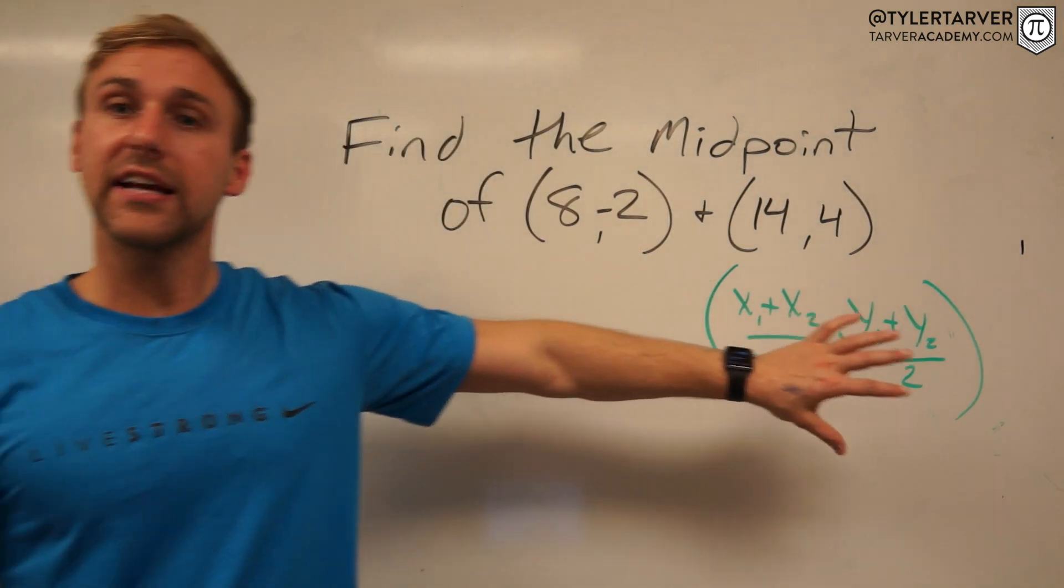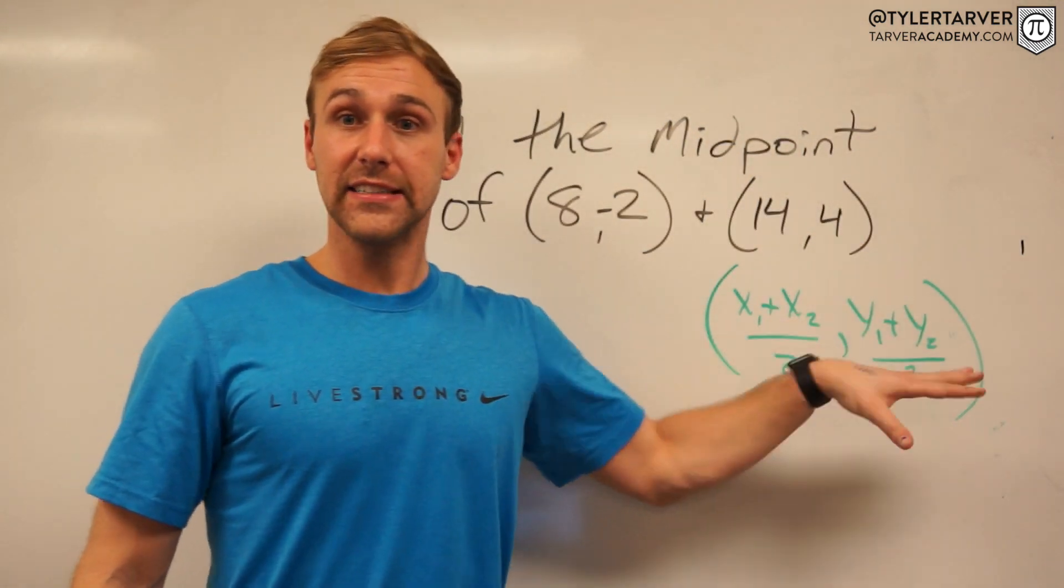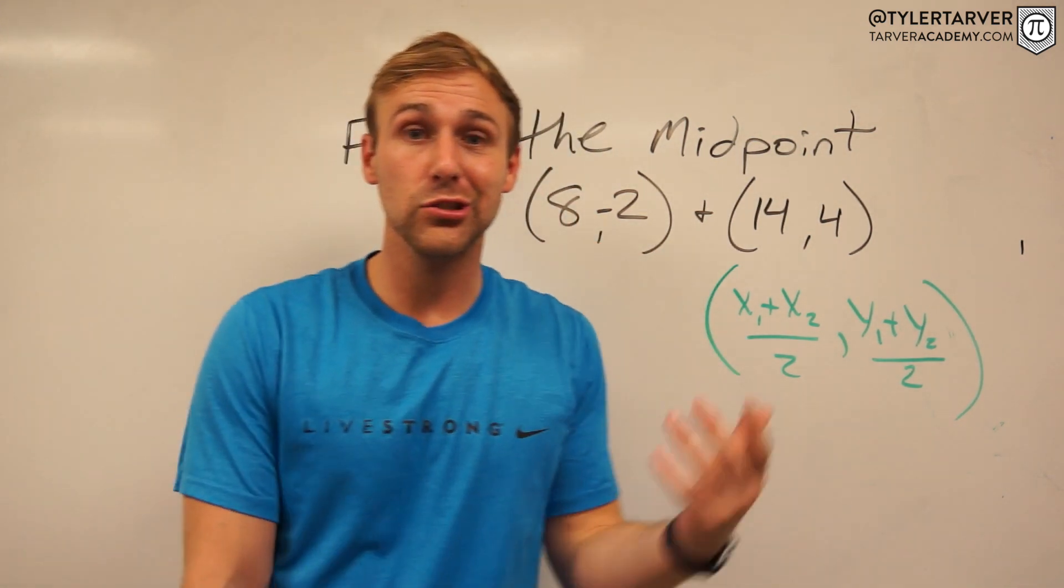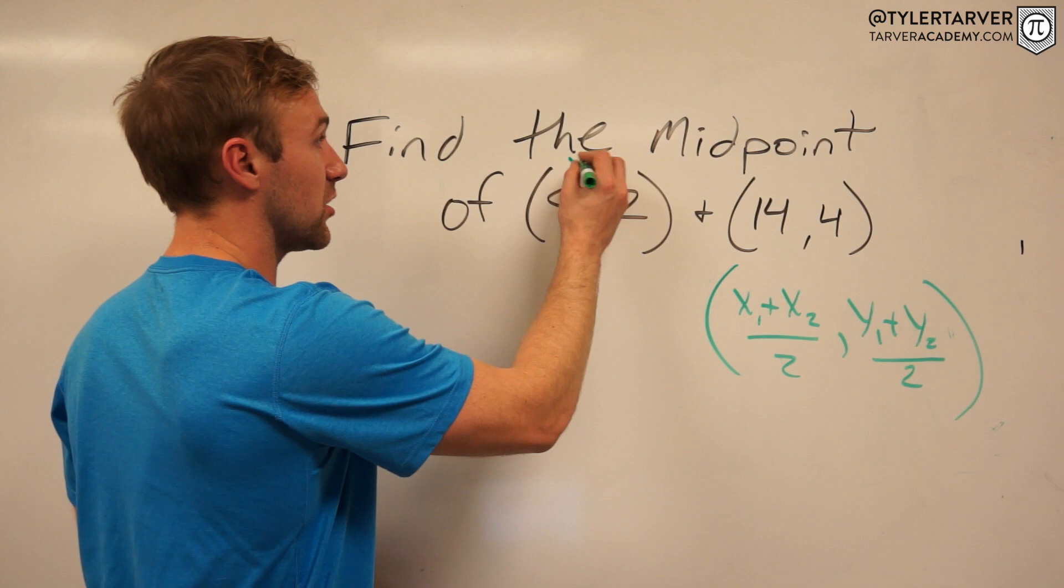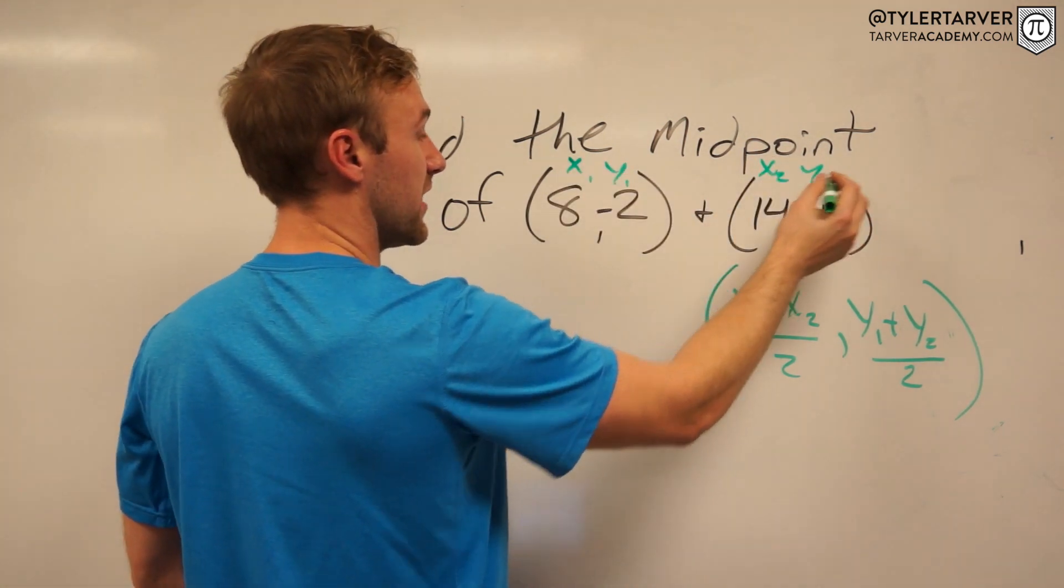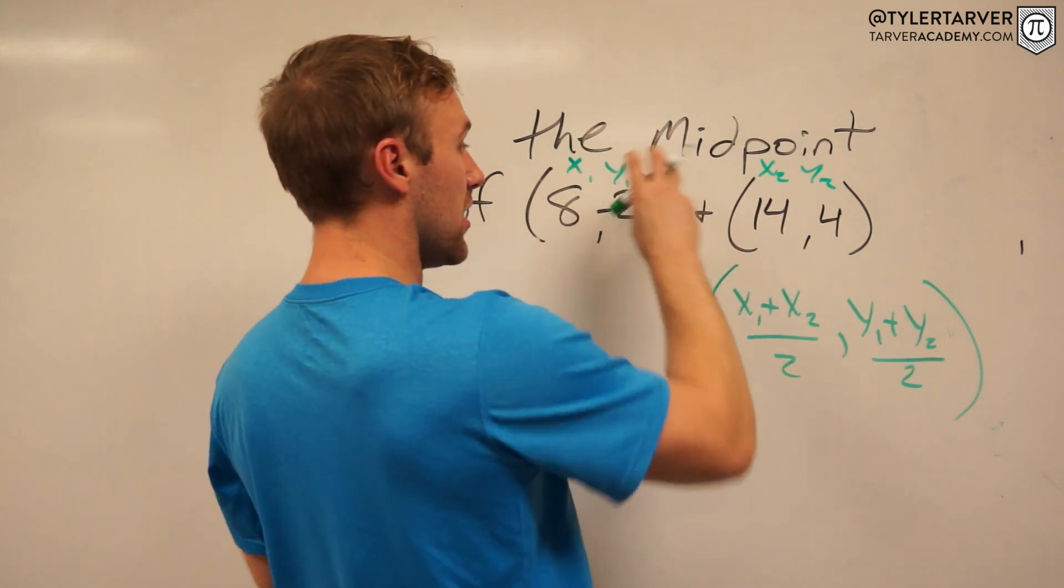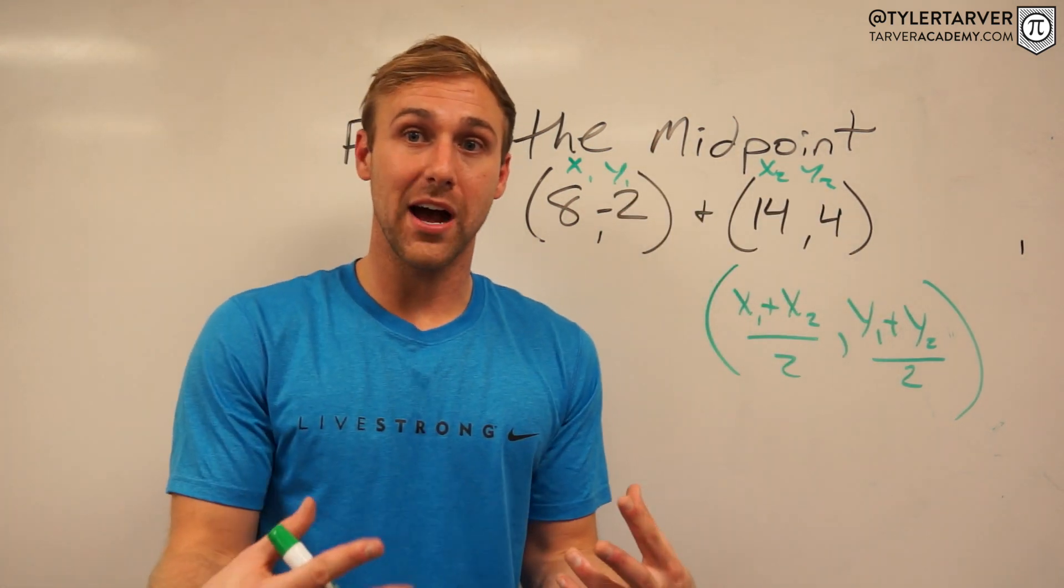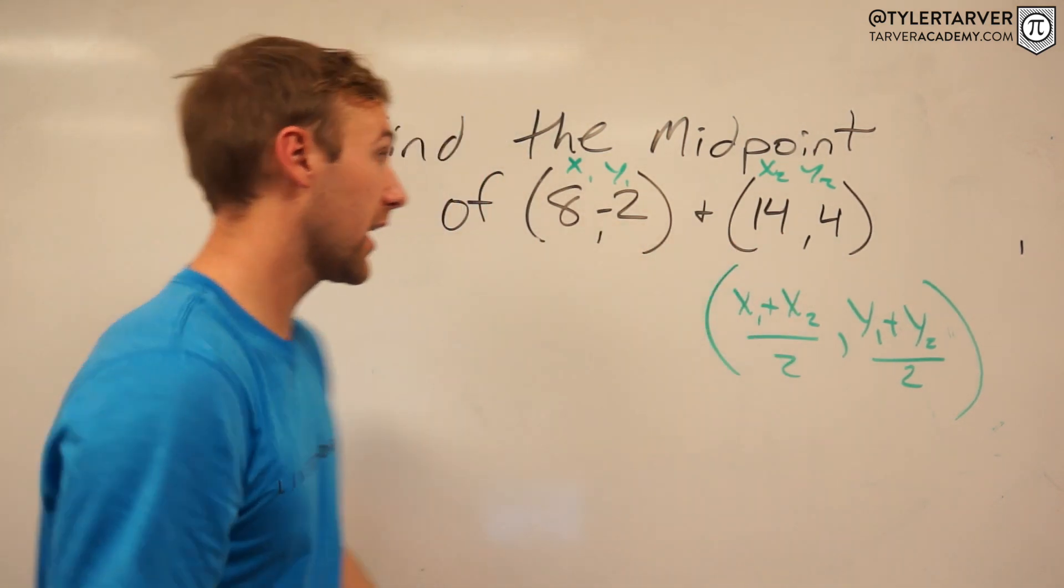Now a lot of kids when they see this, they get scared. They think, oh my goodness, that's a lot of stuff. What's an x1? What's an x2? It just means your x and your y, your x and your y. This is your first coordinate, this is your second coordinate, and then you just pull this stuff out, put it in the spots, and get it together. Here's the way I like to do it in my head, so I want you to try to work it as well.